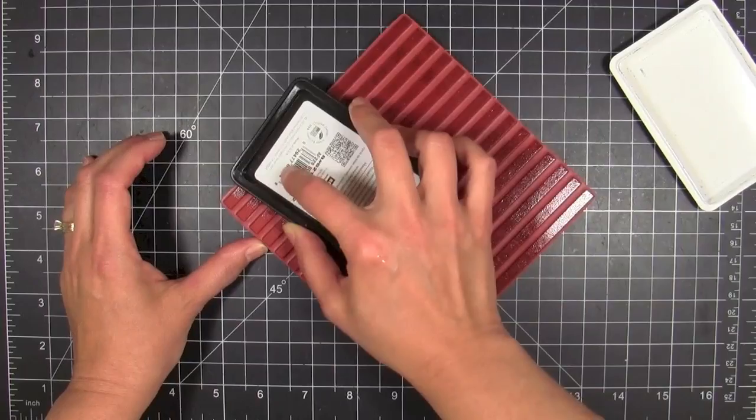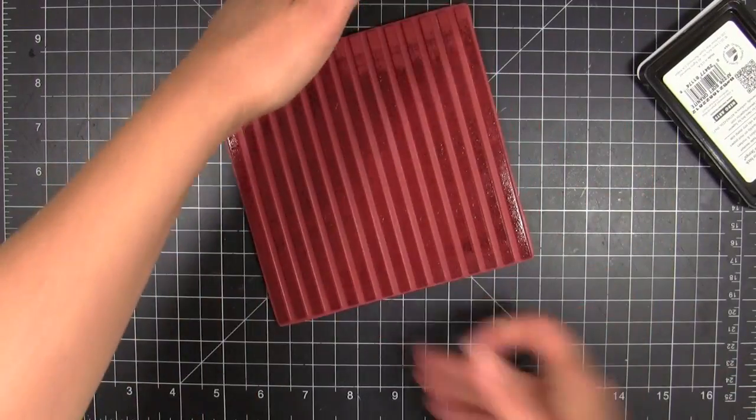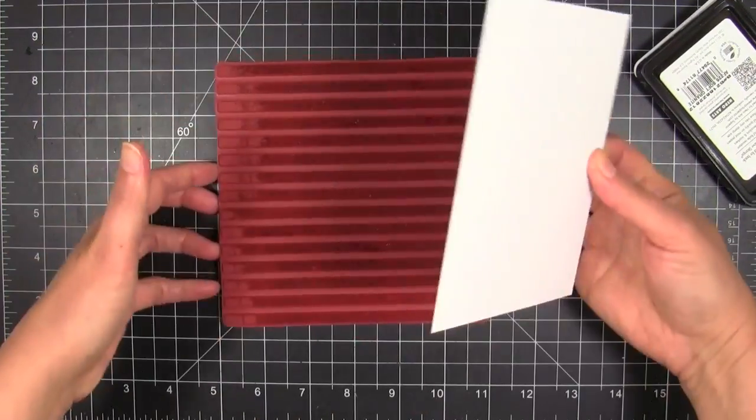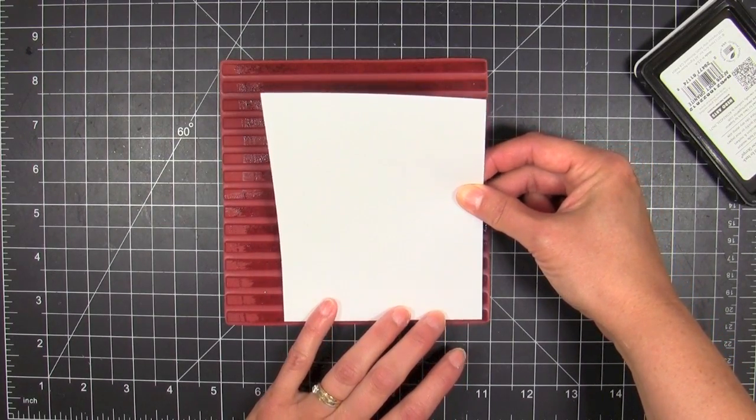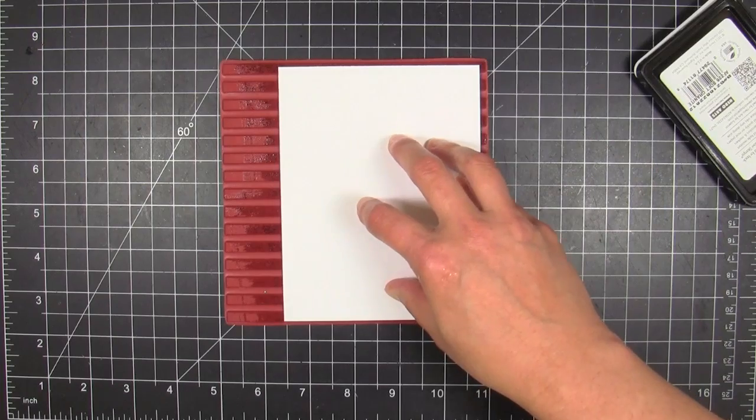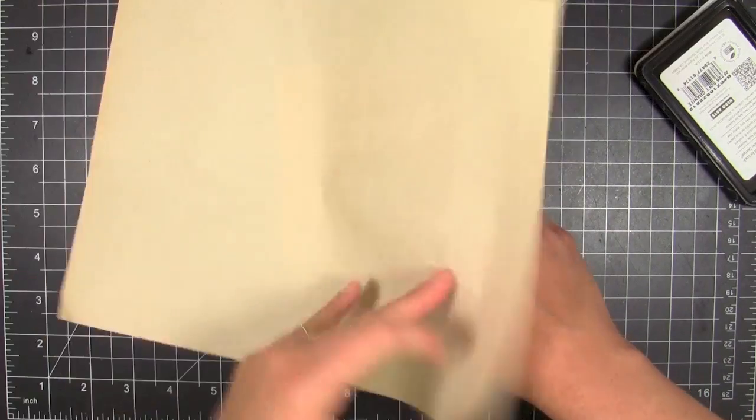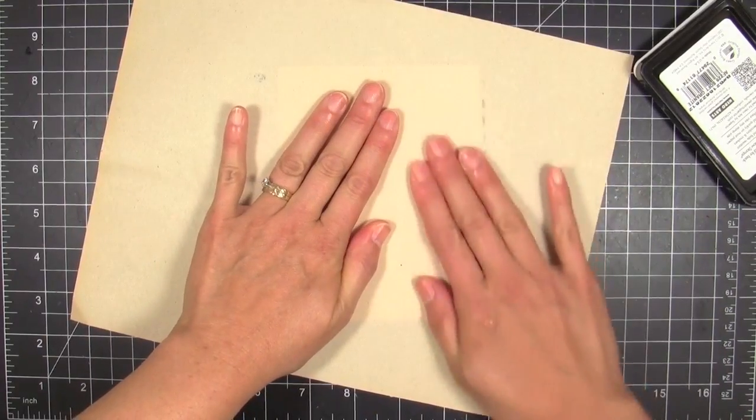I'm using Hero Arts soft granite shadow ink. I absolutely love this ink. Now I'm going to actually impress the image onto the paper from this direction. I find if I've got something I have to be very precise with, like these stripes, to get it dead on, this is the easiest way to do it.